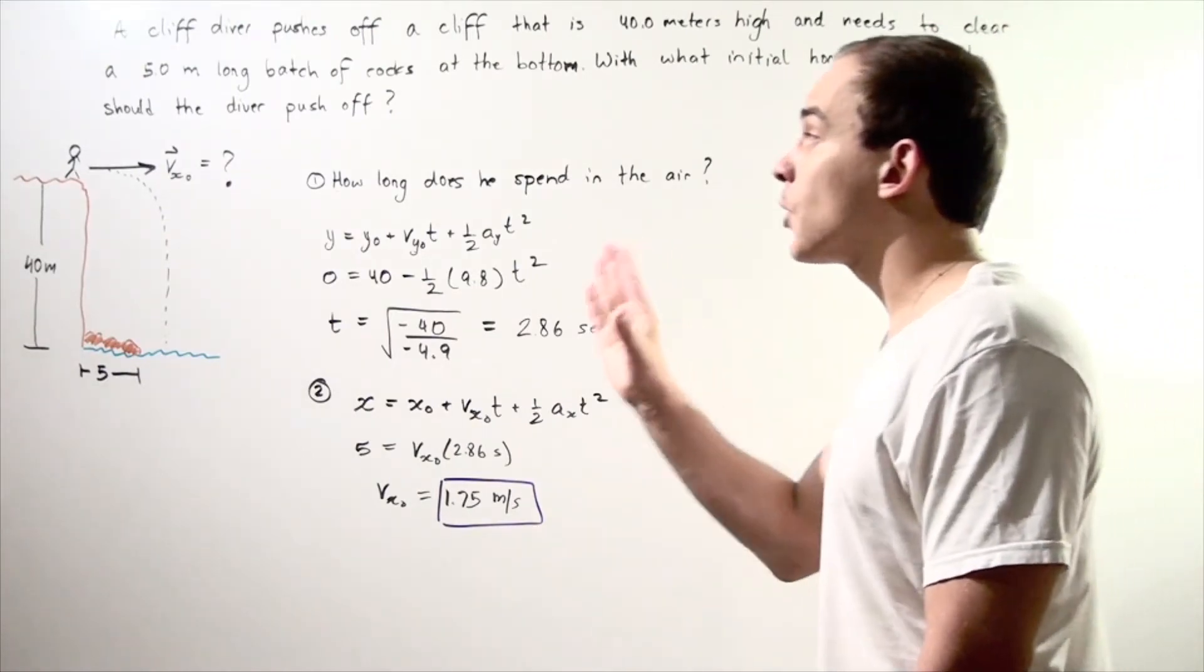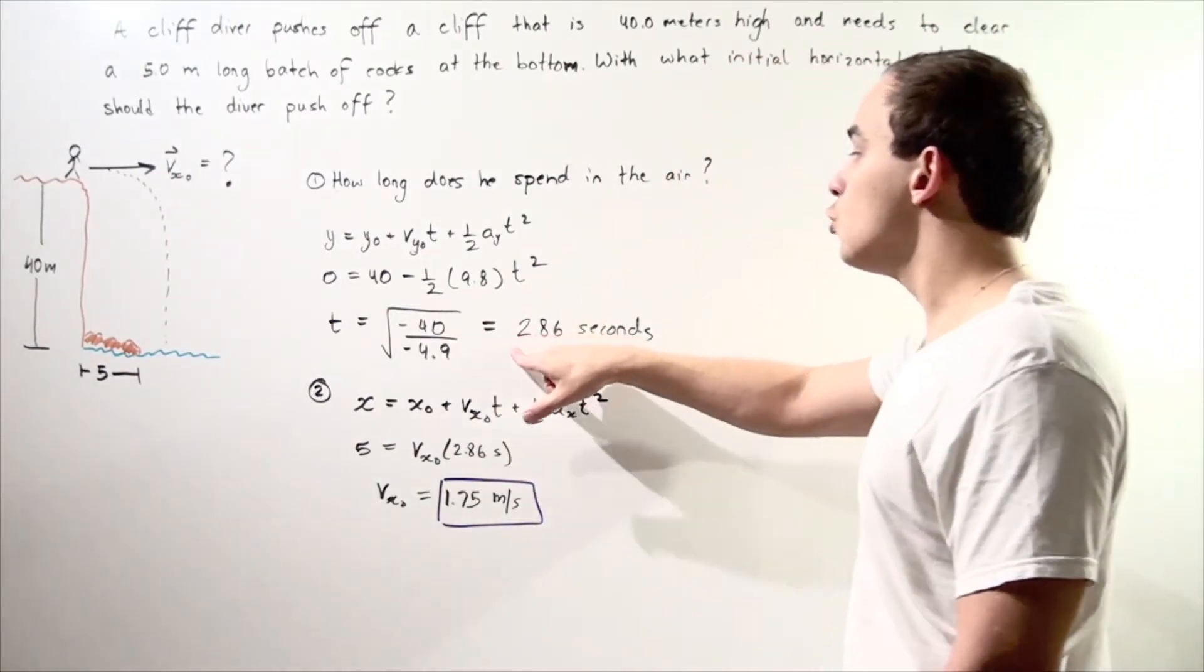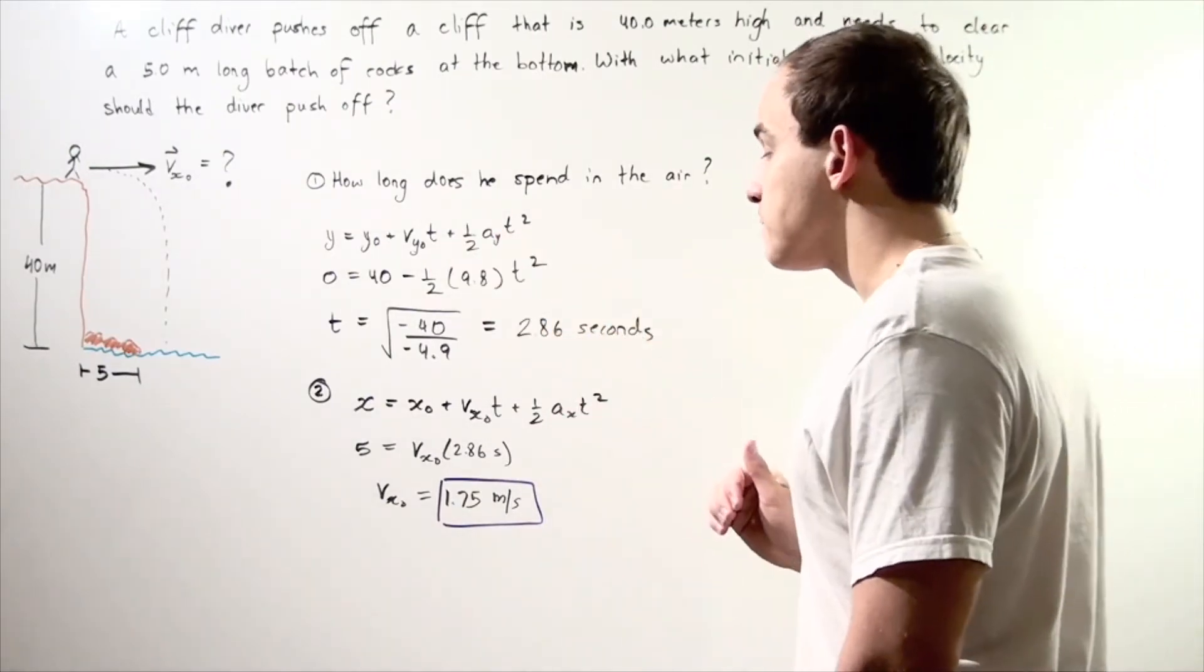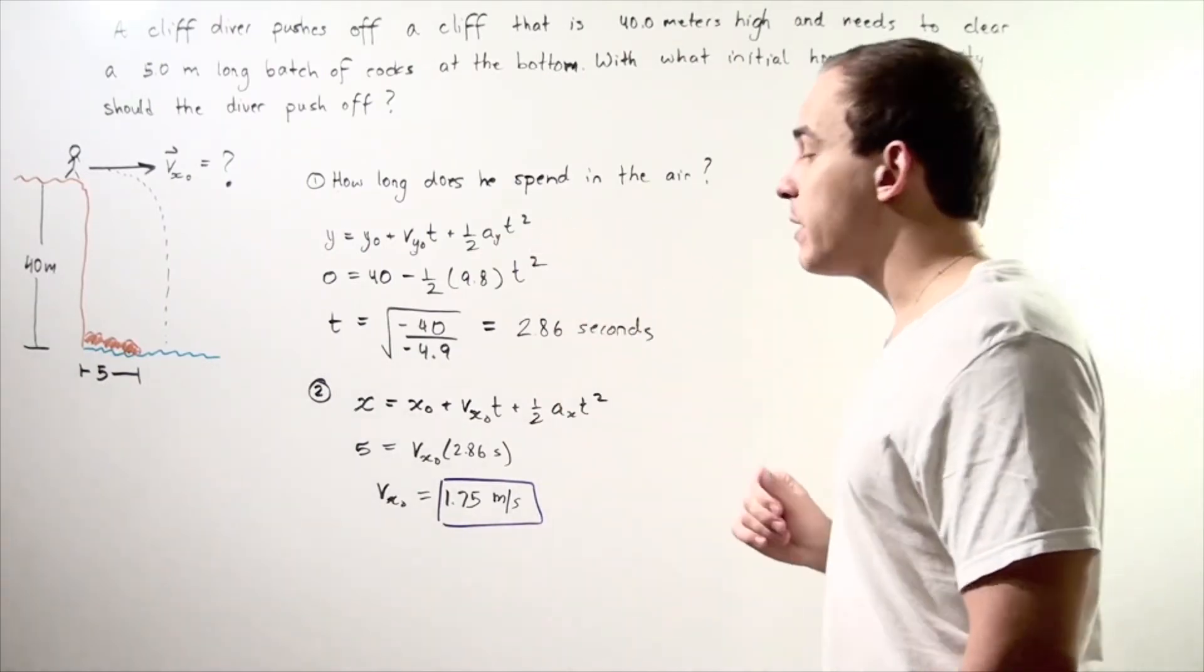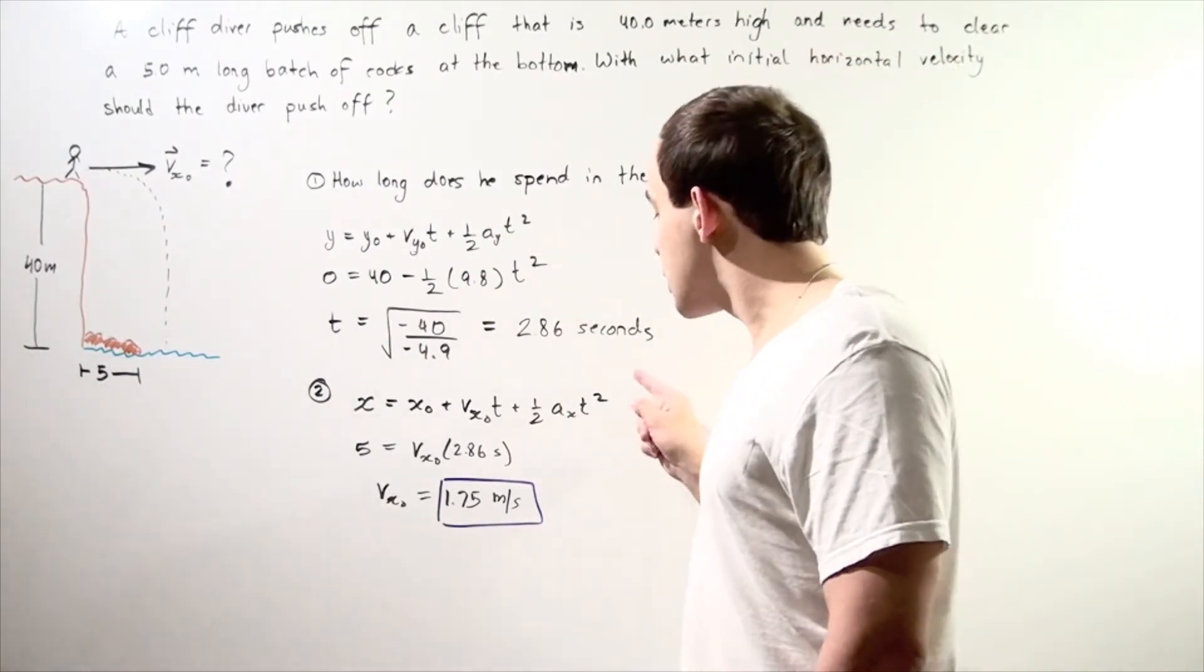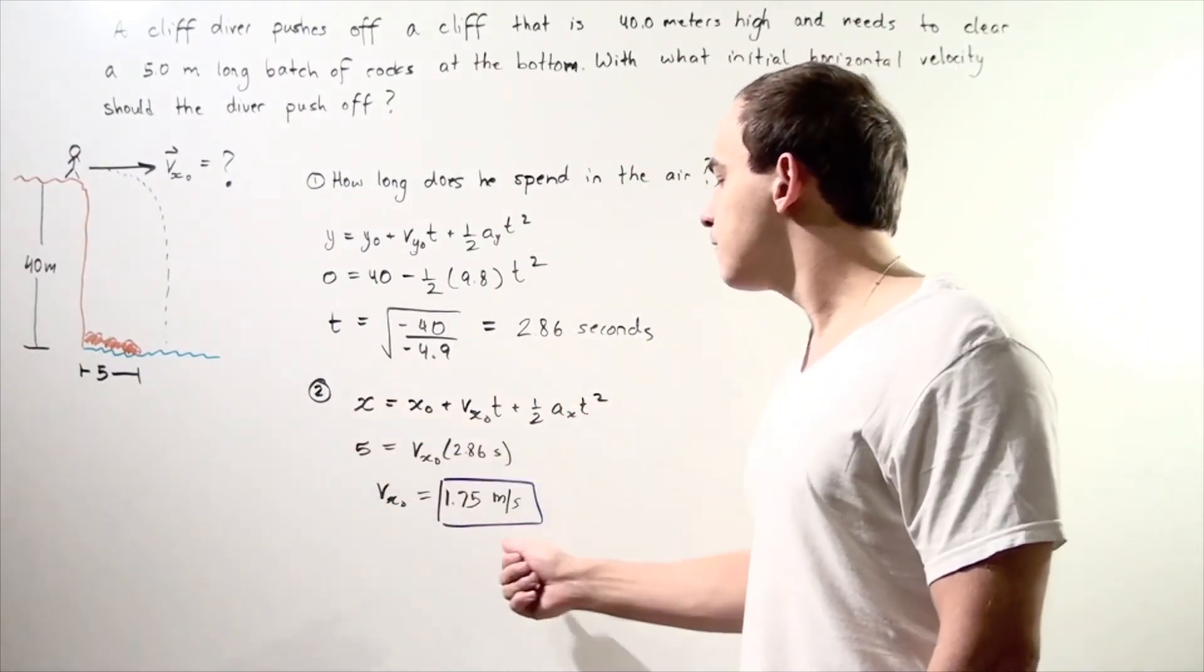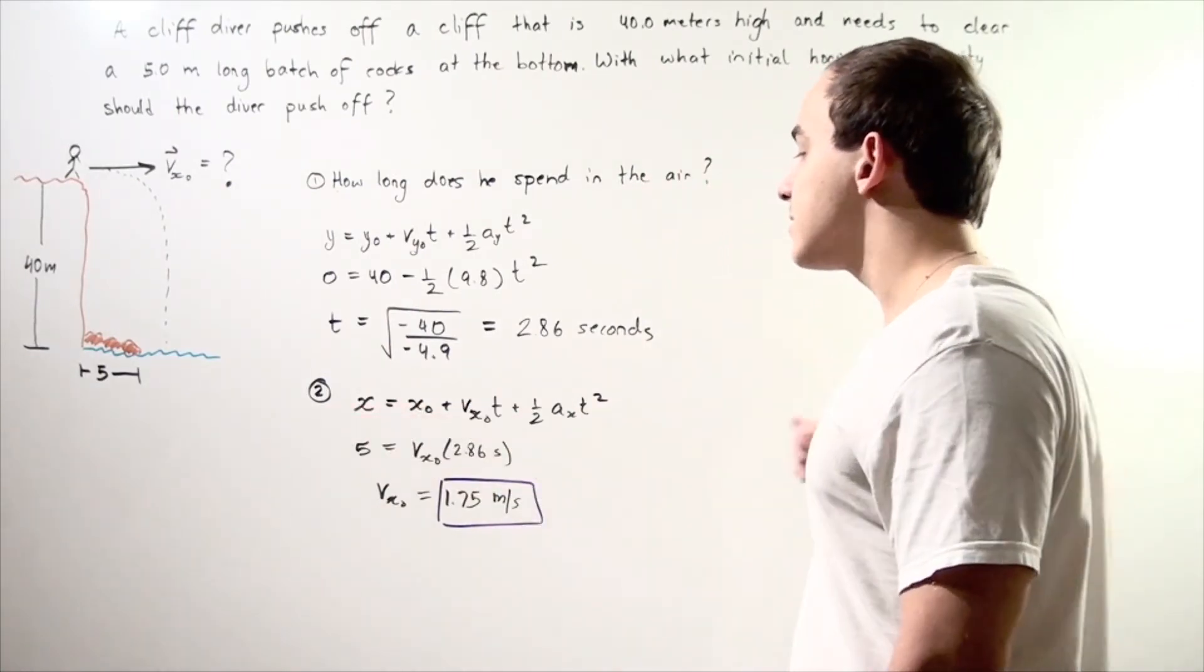In other words, our person spends 2.86 seconds in the air. Now, knowing how much time they spend in the air, we can use this equation to solve for our initial horizontal velocity.